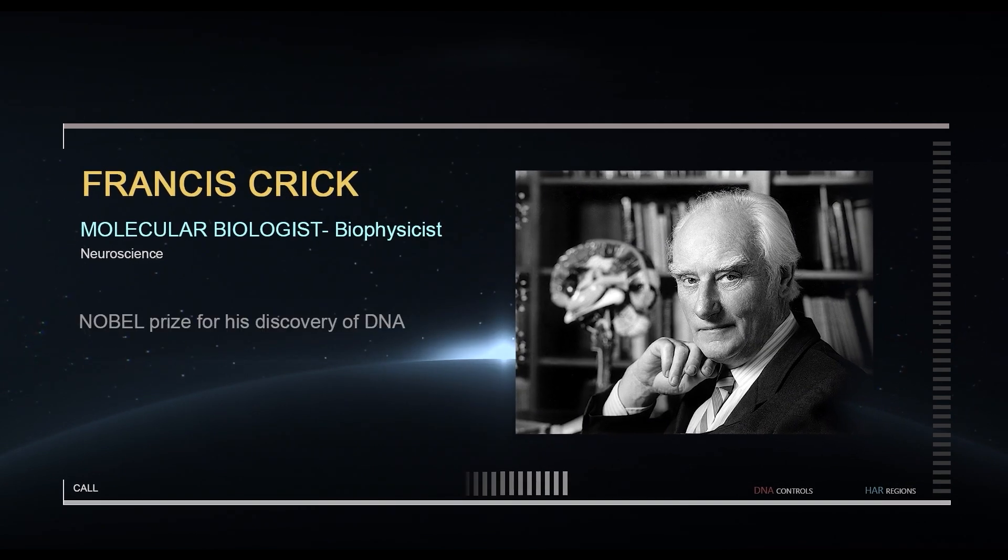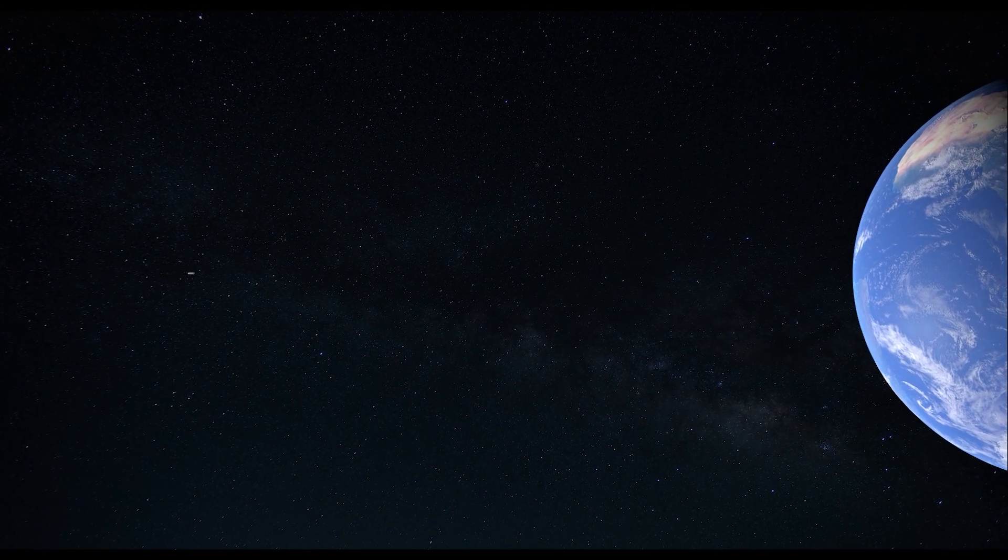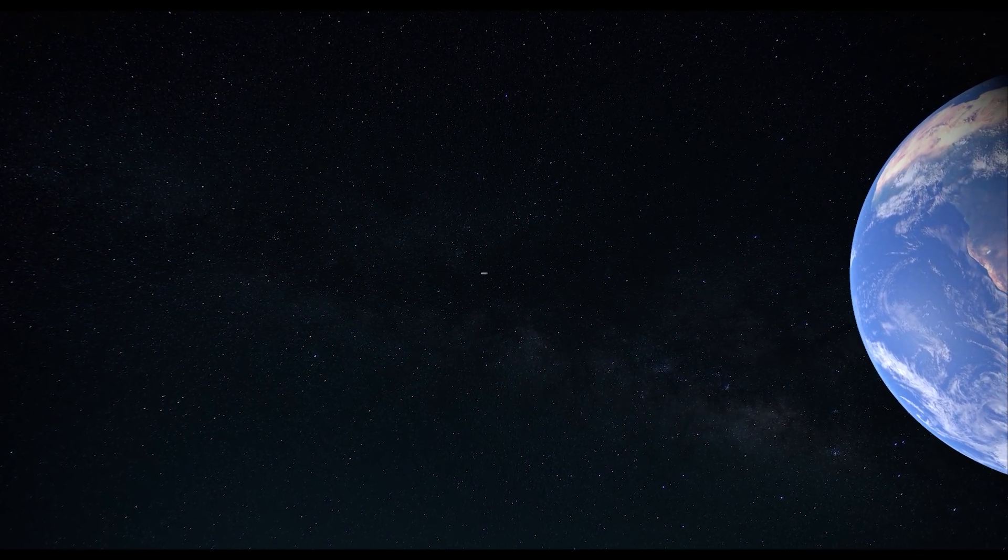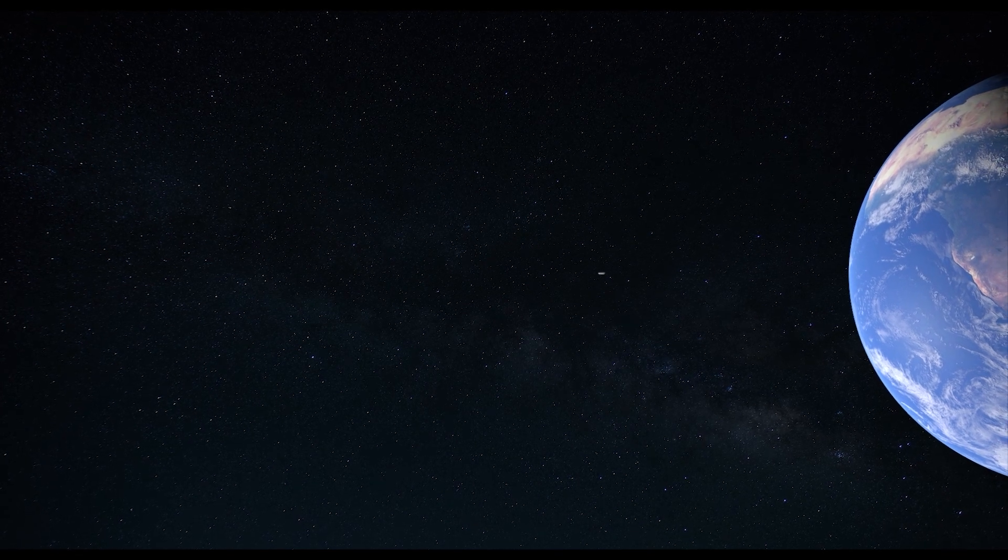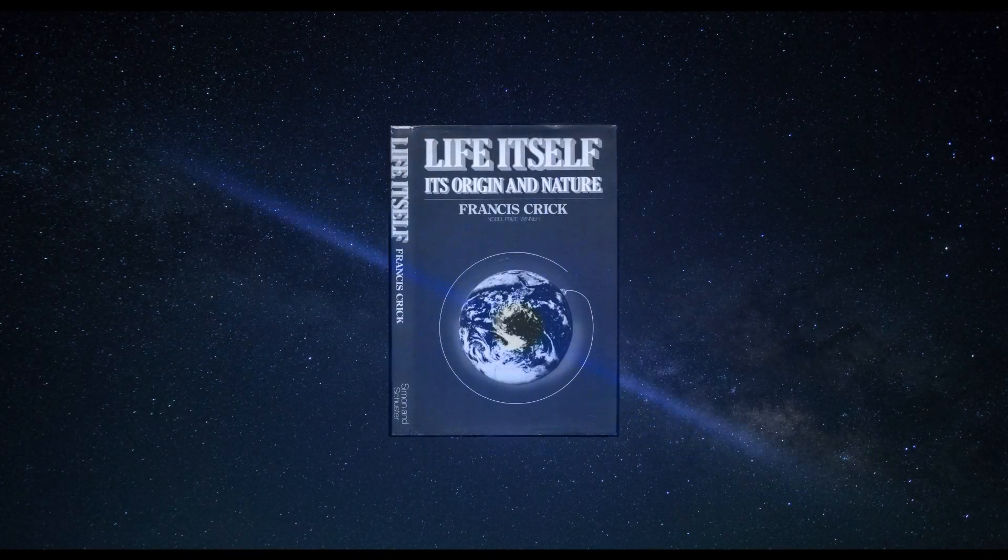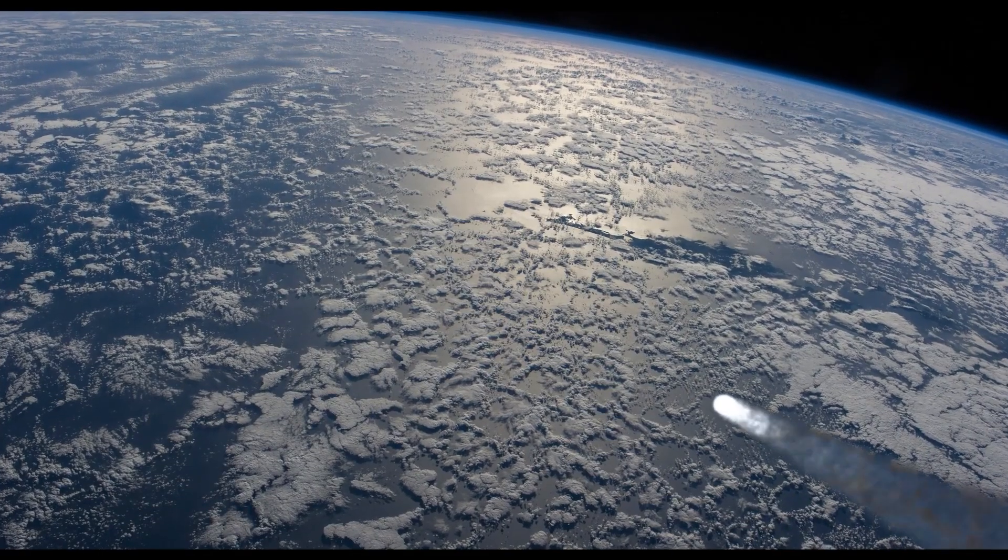Francis Crick, Nobel Prize winner and co-discoverer of DNA, argued for the theory of panspermia, the seeding of our galaxy with the genetic coding for conscious, intelligent life. Could it explain the appearance of DNA on planet Earth? In his book Life Itself, Crick proposed that the primordial life form may have arrived on Earth in the ancient past, sent by a more advanced civilization.